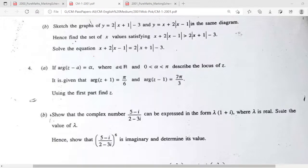If you come to next part, part B, you are given a complex number, you have to simplify and express that complex number in the form of lambda times 1 plus i. Can you try to do it?